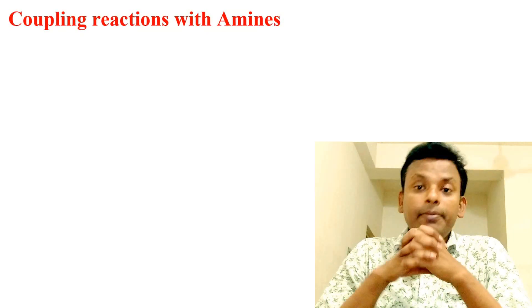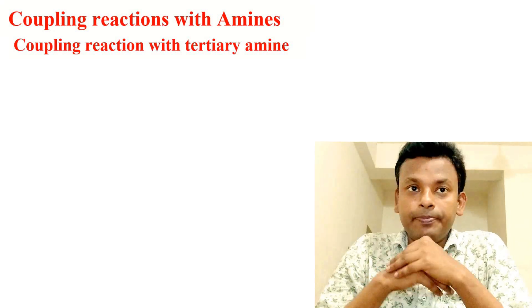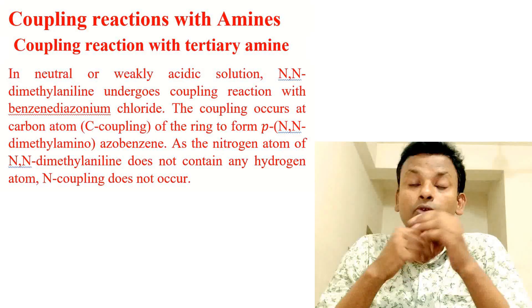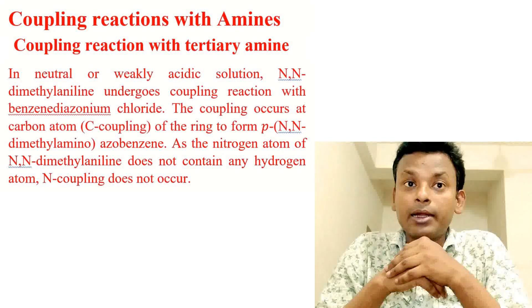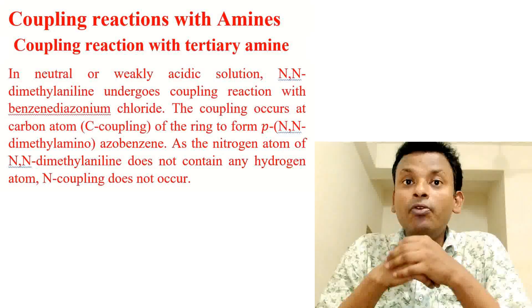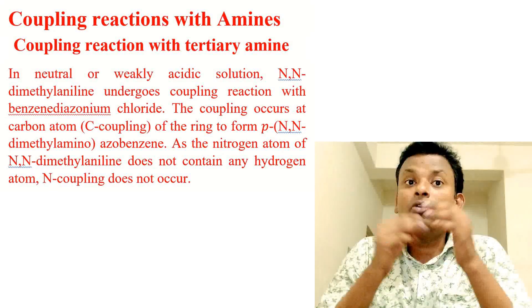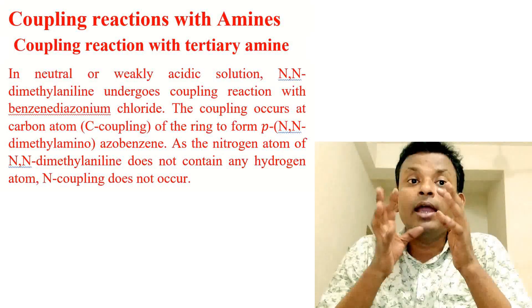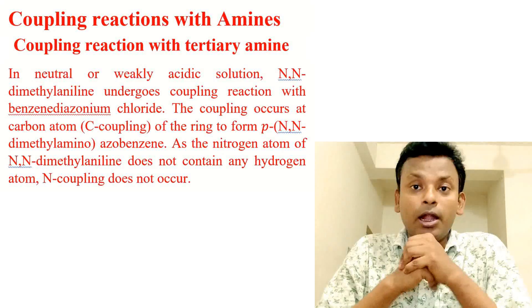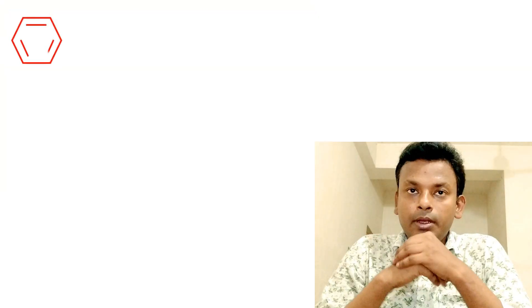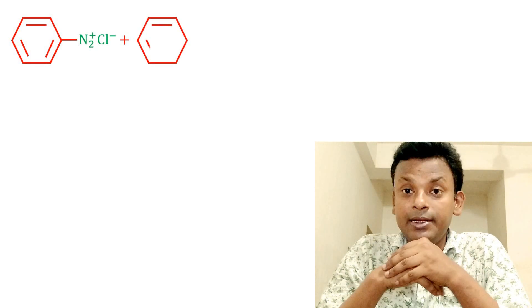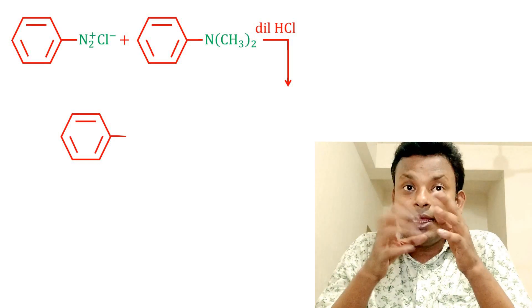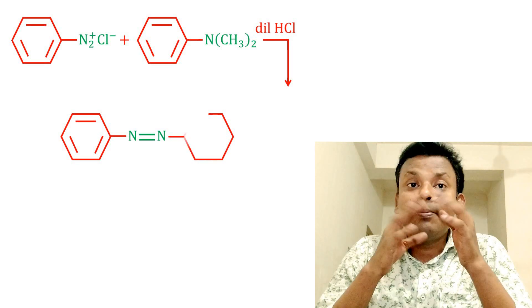Coupling reaction with tertiary amine: in neutral or weakly acidic solution, NN-dimethylaniline undergoes coupling reaction with benzene diazonium chloride. Coupling occurs at the carbon atom of the ring — that is C-coupling — to form para-NN-dimethylamino azo benzene, because the nitrogen atom of NN-dimethylaniline does not contain any hydrogen atom, so nitrogen coupling does not occur. The reaction with dilute HCl gives para-NN-dimethylamino azo benzene, which is butter yellow in color.